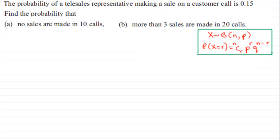Then for part A, we need to define our random variable. So I'm going to say let X be the random variable number of sales made, where X is distributed binomially.